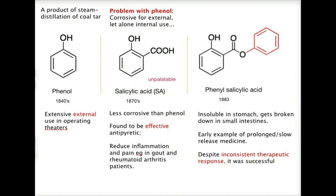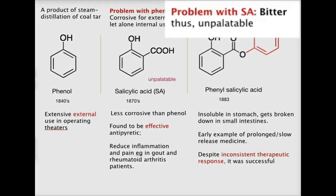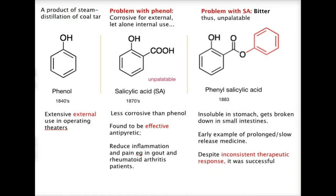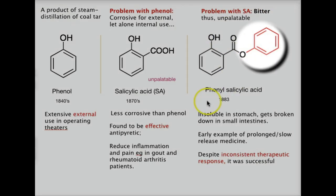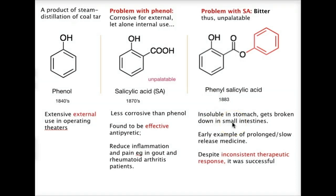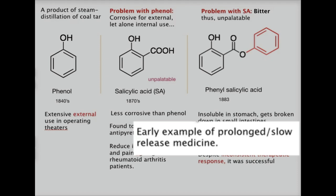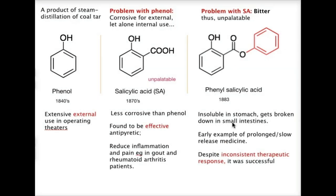The problem with salicylic acid, however, was that it was unpalatable and bitter. So people thought: can you change the taste of this good anti-inflammatory agent by modifying the moiety on the structure? They added on a phenol group to make it into a phenol ester. This phenyl salicylate was found to be insoluble in the stomach and gets broken down in the small intestine — a really good early example of slow-release medicine. However, it gave inconsistent therapeutic responses; sometimes it could reduce fever, sometimes it didn't.